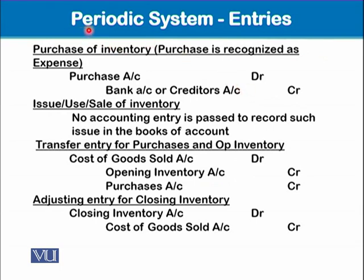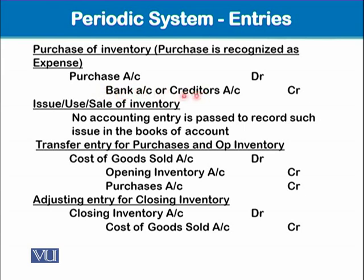Under the periodic system, the purchase of inventory is recognized as an expense. The accounting entry is: purchases account debit, and bank account or creditors account credit. From the start of learning accounting, we follow this periodic system — whenever we buy goods we debit purchases account and credit cash, bank, or creditors account.